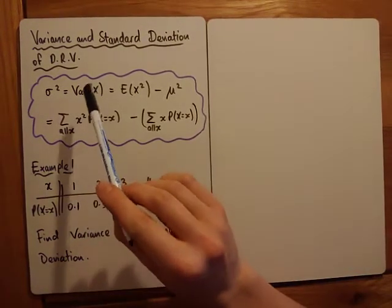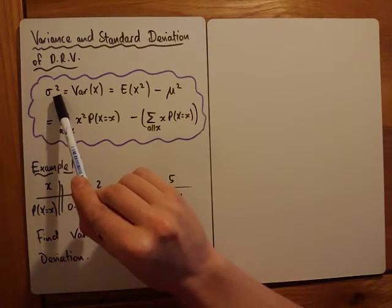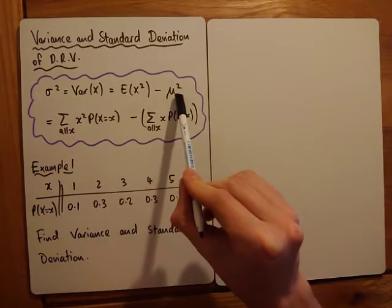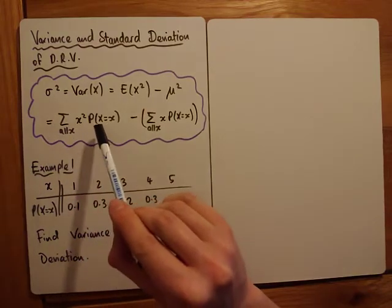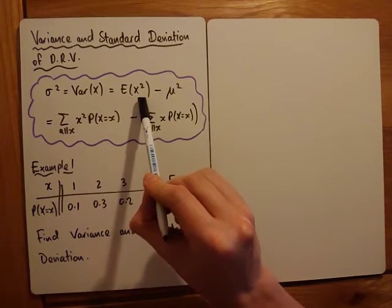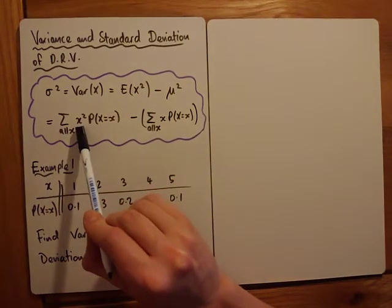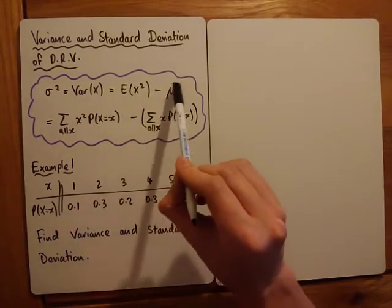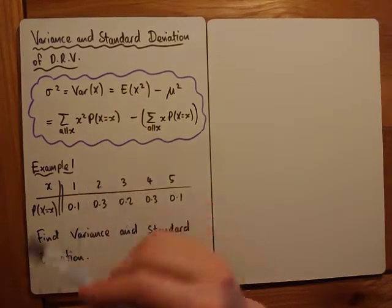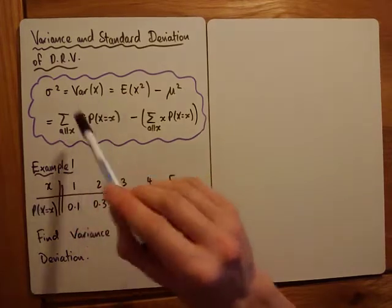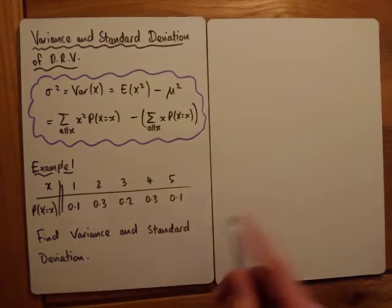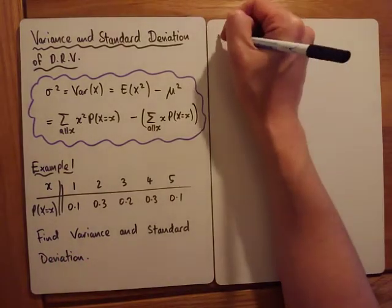The formula we use for a discrete random variable is: sigma squared equals the expected value of X squared minus the mean squared. That is, Var(X) = E(X²) − [E(X)]². The expected value of X squared is the sum of x² times its probability, and E(X) is the sum of x times its probability. Often in a question you'll already know the mean and can plug it straight in.